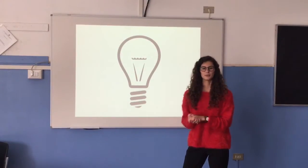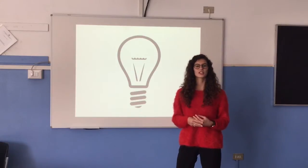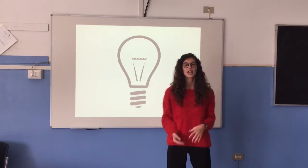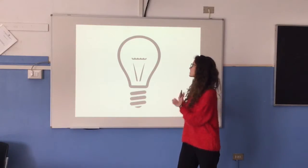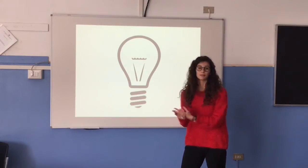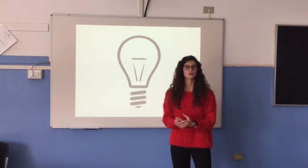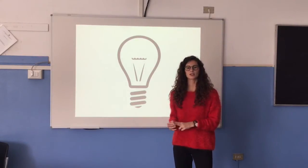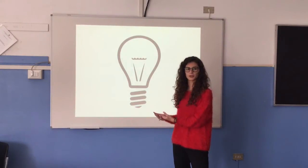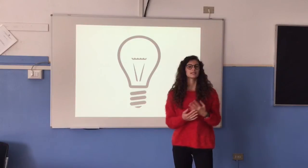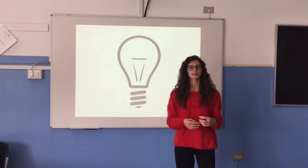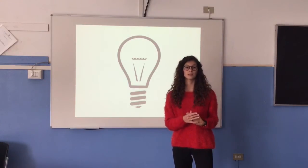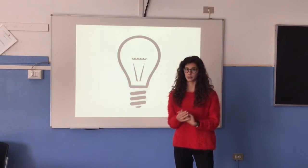All of us use the light bulb, but not everyone knows how it works. A light bulb consists of all integrated parts. The metal base has two metal contacts that connect to the circuit's input. The metal contacts attach to two steel wires, which themselves are connected via a filament.